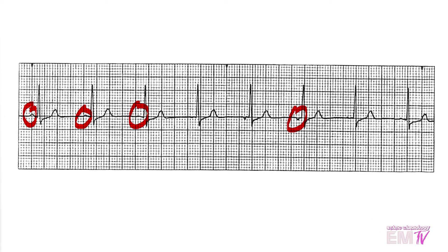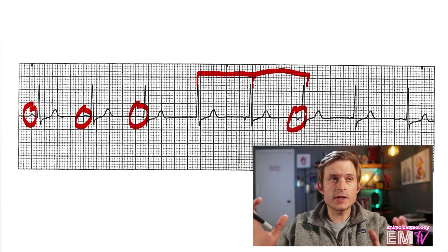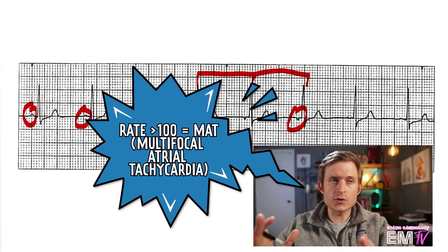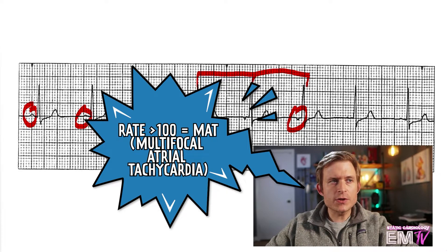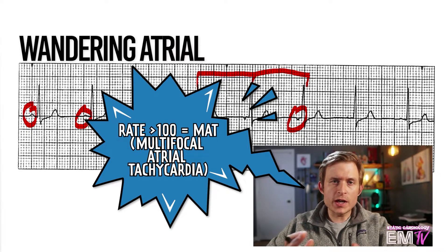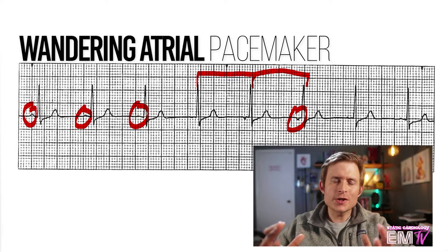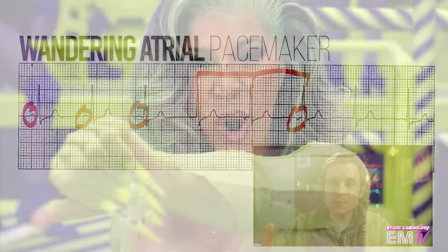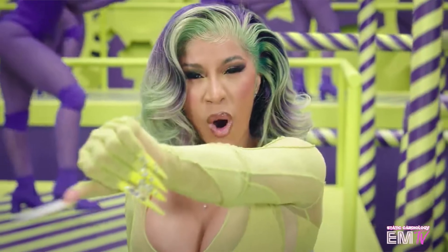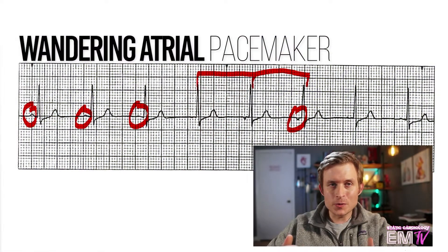The R to R interval here is also nice and regular. Now, because I have at least three variations of P waves present and the rate is under 100, this meets the criteria for wandering atrial pacemaker, otherwise known as WAP — formerly called WAP, but Cardi B kind of ruined that acronym for EMS and for rhythm interpretation.